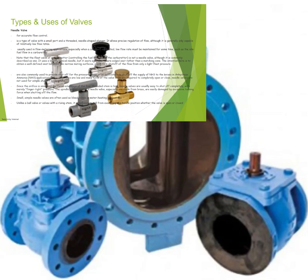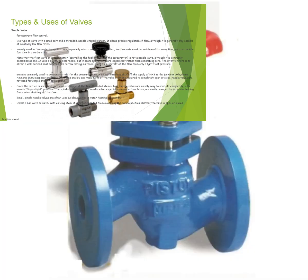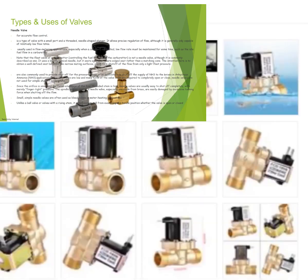Needle valves are usually used in flow-metering applications, especially when a constant calibrated flow rate must be maintained for some time, such as in the idle fuel flow of a carburetor. Note that the float valve of the carburetor, which controls the fuel level within the carburetor, is not a needle valve, although it is commonly described as one. It is used for blunt conical plungers.